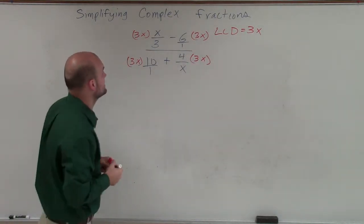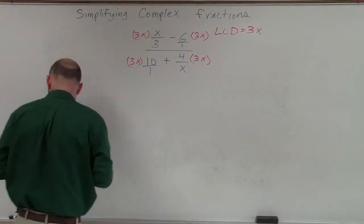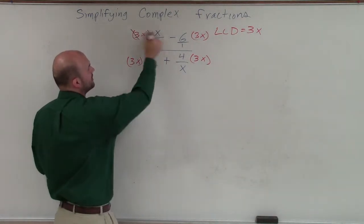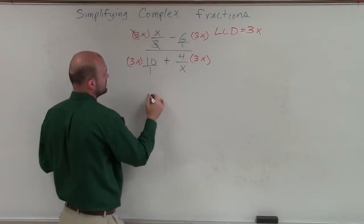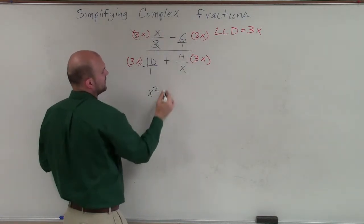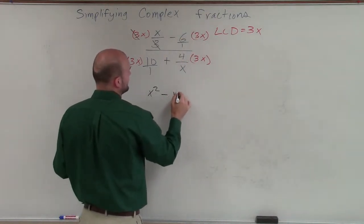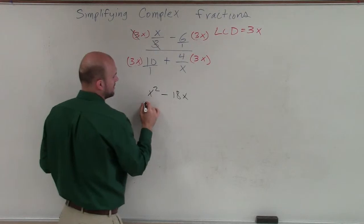So by multiplying by 3x, we see my 3's will divide out to 1. That's going to leave me with an x squared. Over here, I'll have minus 3 times x, which is going to leave me with negative 18x. And I'm just going to have 1 in my denominator.